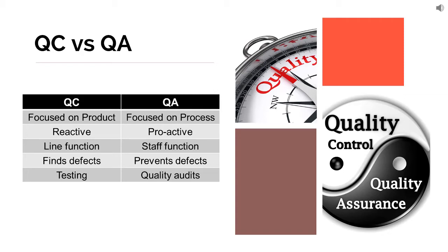This is somewhat similar to what we said about reactive and proactive. QC is related to testing and QA is related to quality audits. Testing is the tool for quality control and audits are the tools for the quality assurance function. This slide gives you the difference between these two aspects of quality — quality control and quality assurance.